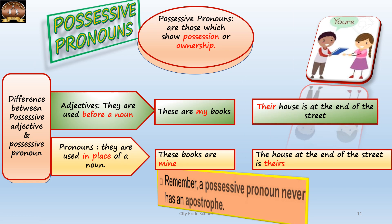Possessive pronouns show possession or ownership, just like possessive adjectives, but there is a difference in position. Possessive adjectives come immediately before a noun, whereas possessive pronouns are used in place of a noun — so there is no noun immediately after a possessive pronoun. For example, 'These are my books' — here 'my' is a possessive adjective because a noun follows immediately. Whereas 'These books are mine' — 'mine' is a possessive pronoun because there is no noun after it. My is always used as a possessive adjective and mine is always used as a possessive pronoun.